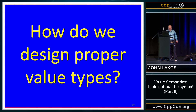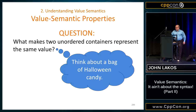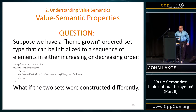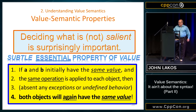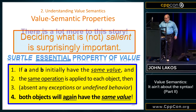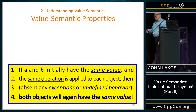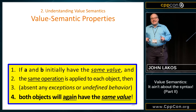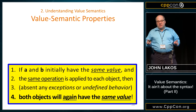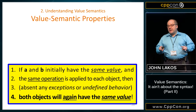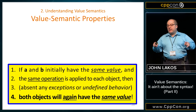The essential property — let's go back to that slide. If A and B have the same value today, and we do the same operation on A and B, then if they had the same value before and nothing funny happens, they will again have the same value. Otherwise, they never did.